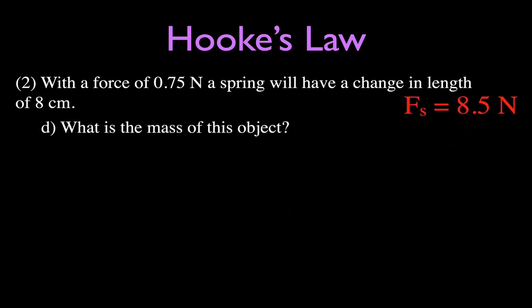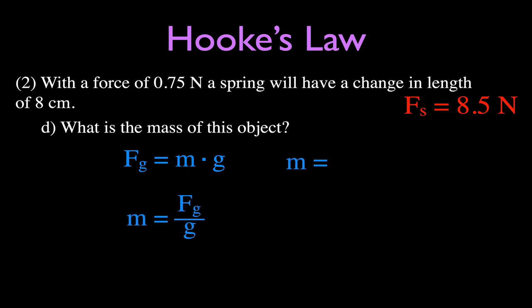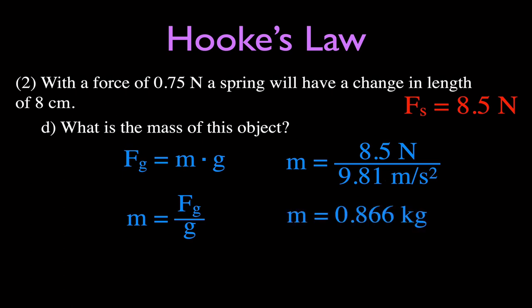For part D, we take that 8.5-newton force and find the mass of the object. We use Newton's second law for gravity: FG equals m times g. Solving for mass: force divided by g (9.81 m/s²). So 8.5 newtons divided by 9.81 gives a mass of 0.866 kilograms, which is 866 grams.